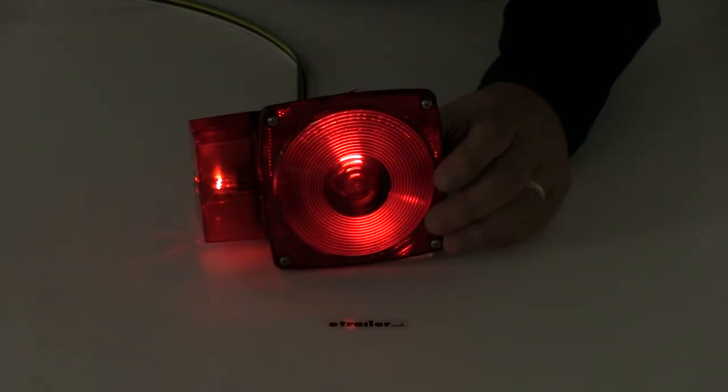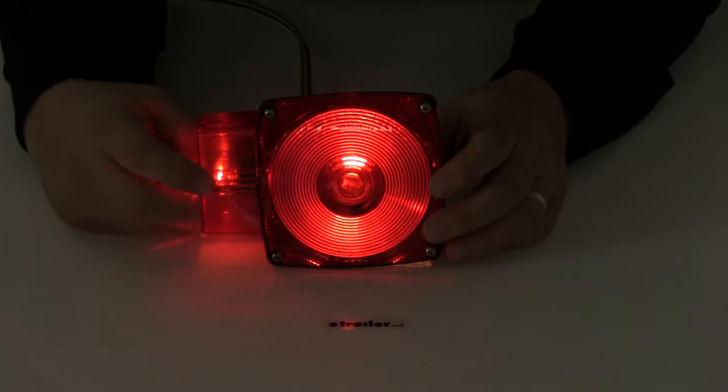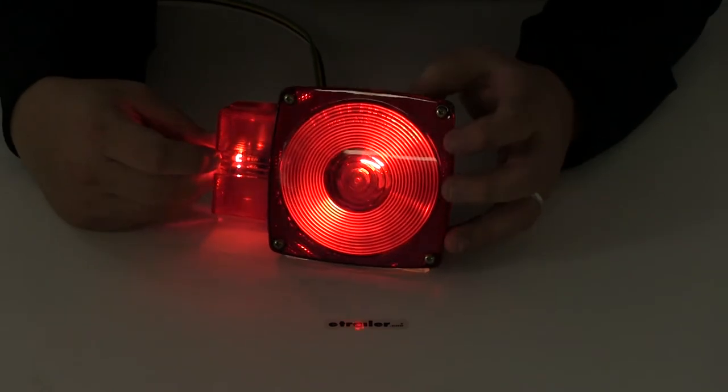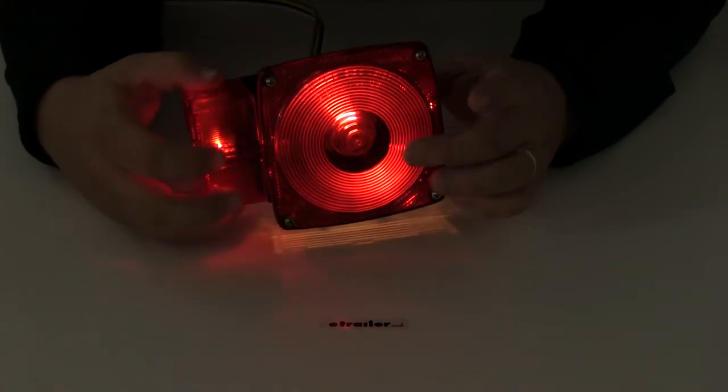You can see here that the light provides a nice consistent glow, a nice strong signal. This is for the tail light function. It's going to have a couple different bulbs in it, the main bulb and then the side marker bulb.